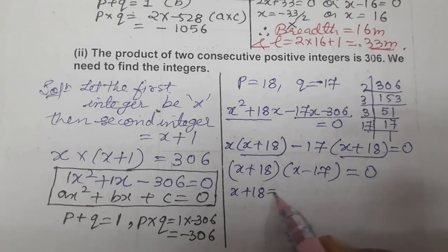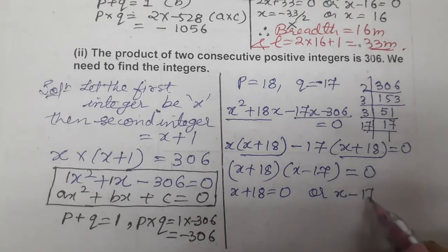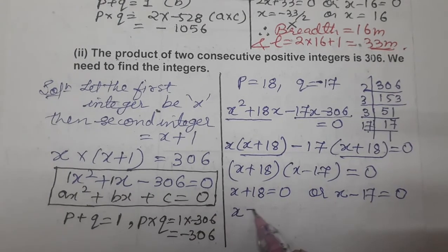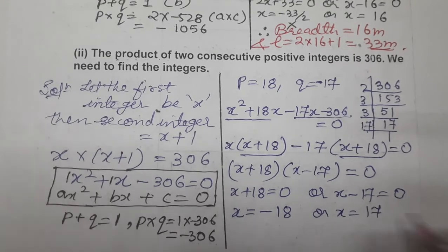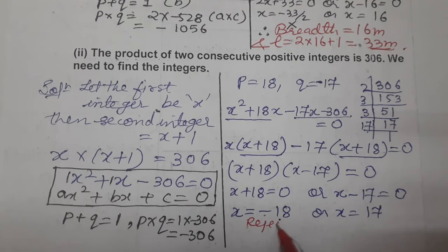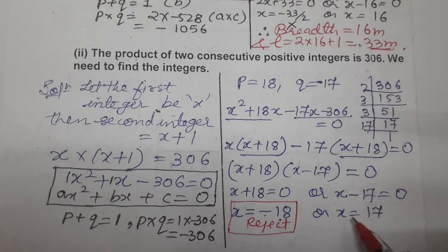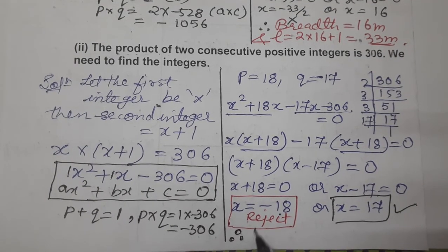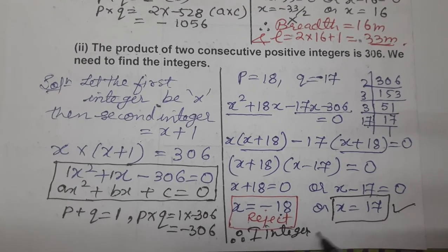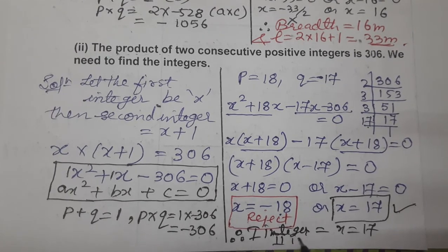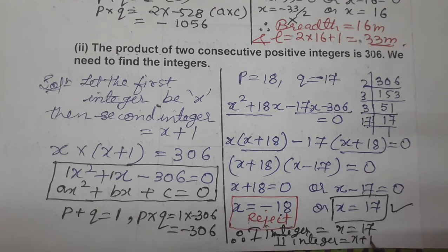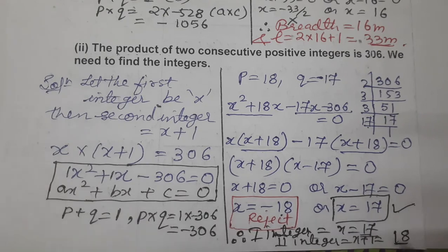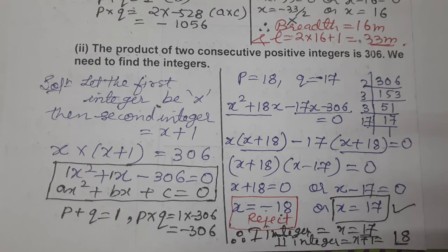Now the product of two numbers is 0, so either x + 18 = 0, giving x = −18 (rejected, since question says positive integers), or x − 17 = 0, giving x = 17. Therefore first integer = 17 and second integer = x + 1 = 17 + 1 = 18. So the two integers are 17 and 18. I hope children that you understood both the questions. Thank you so much for watching the video.